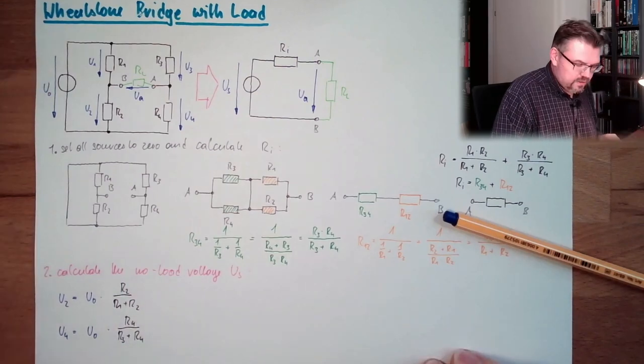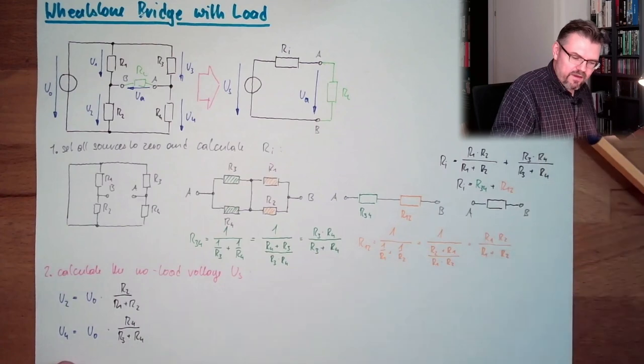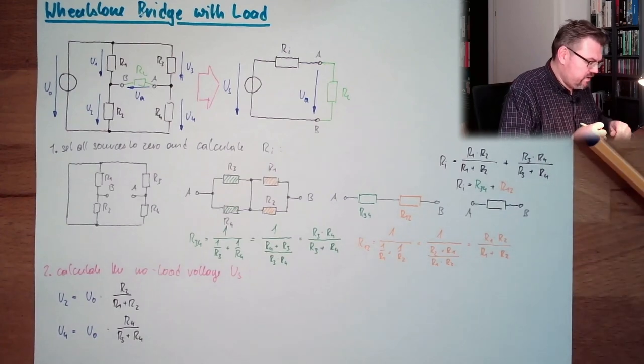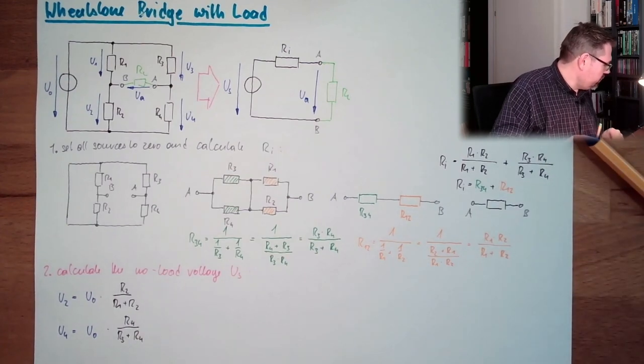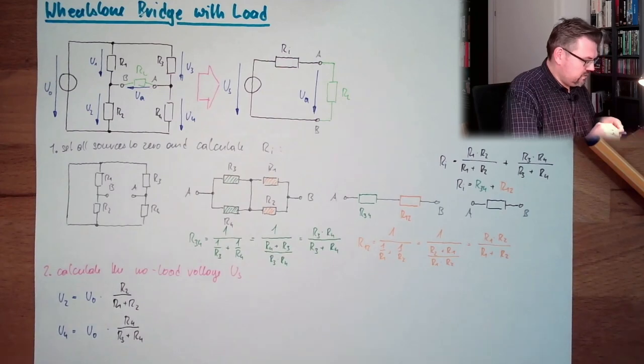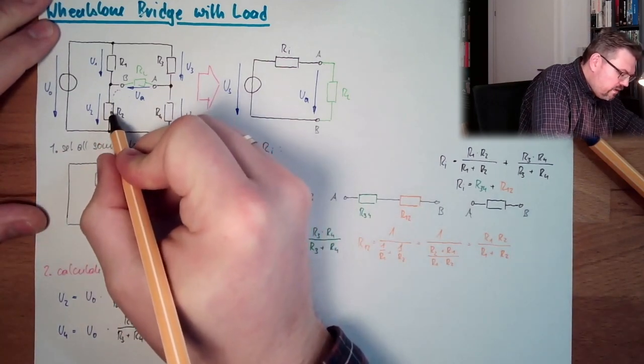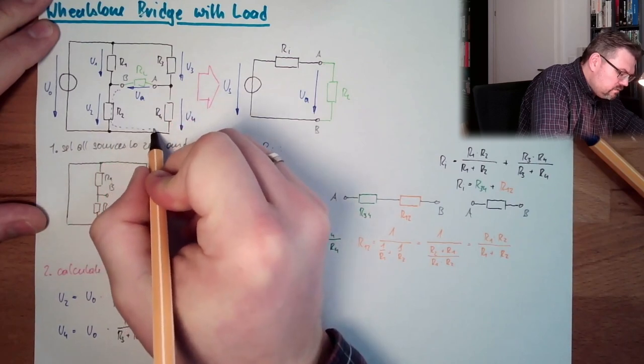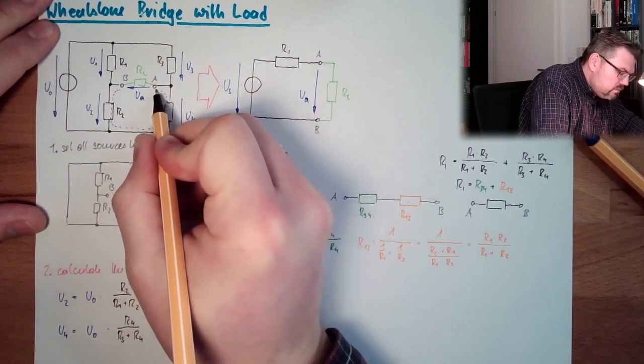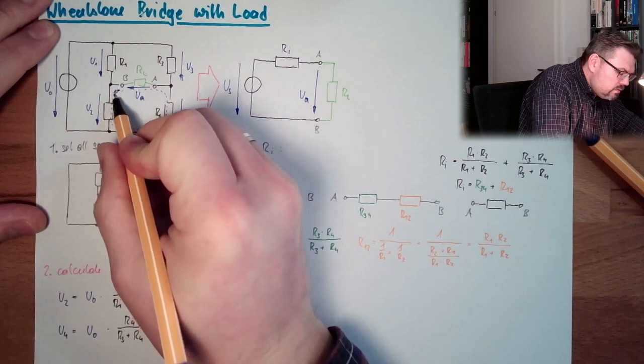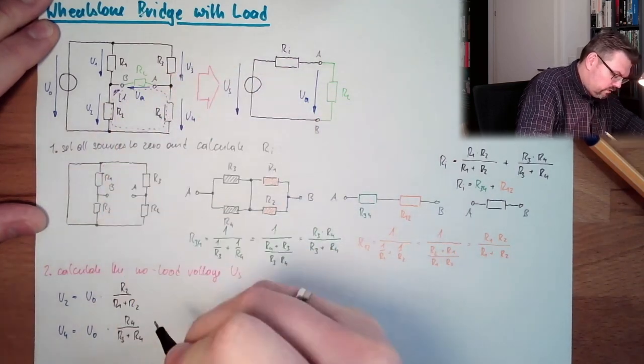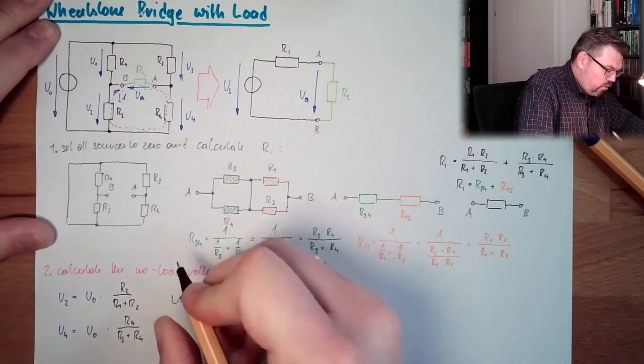Alright, that's what we have here. And then we have here, which color do I use? This purple, have here a loop. Loop one. Loop one. Loop one. What does it mean?